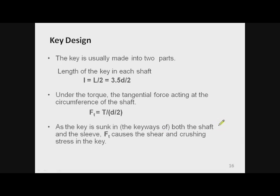The last part is the key. The key is usually made in two parts — one part joins one shaft and the other part joins the other shaft with the muff. Capital L is the length of the muff, so the length of key in each shaft is one half of L. The key is mounted on the circumference of the shaft, so we identify the force on the key, which equals the tangential force acting at the shaft circumference, calculated by a simple expression. This tangential force causes shear and crushing stress in the key.